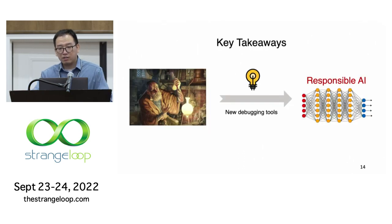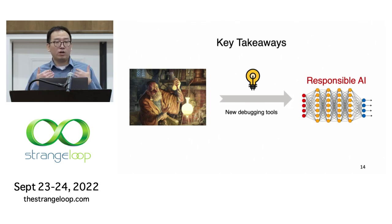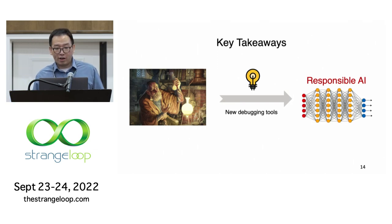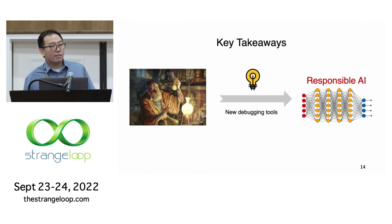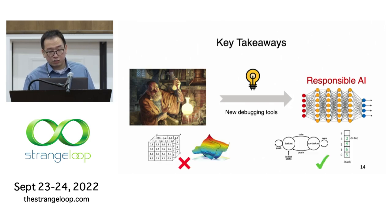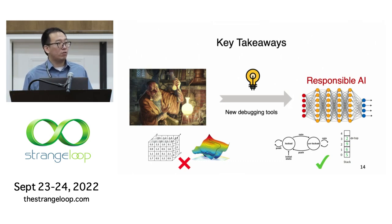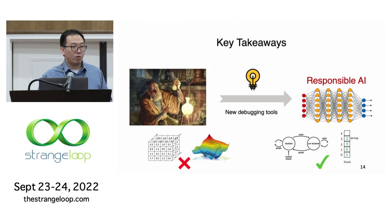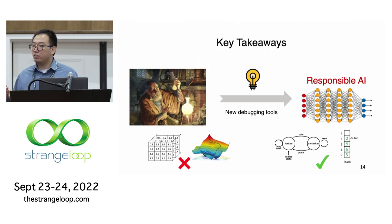Key takeaways: given the opaqueness of deep learning, it's quite important for programmers to understand what we are building and be responsible for model errors. To achieve this goal, we need to build new debugging tools that account for the unique characteristics of deep learning, and to make these tools usable to the broad population of programmers, we need to transform the internals of a deep learning model into something familiar and interpretable to programmers, rather than something that only makes sense to machine learning experts and theorists.